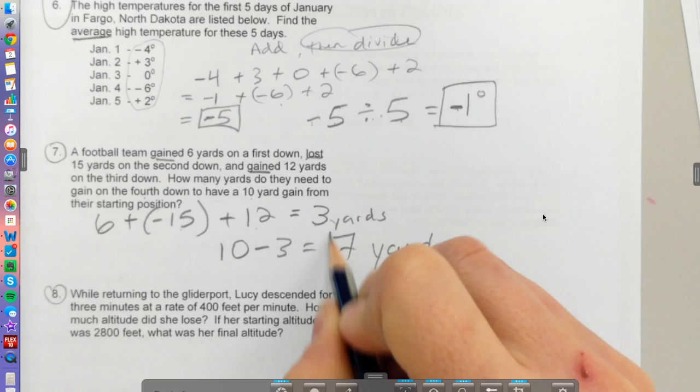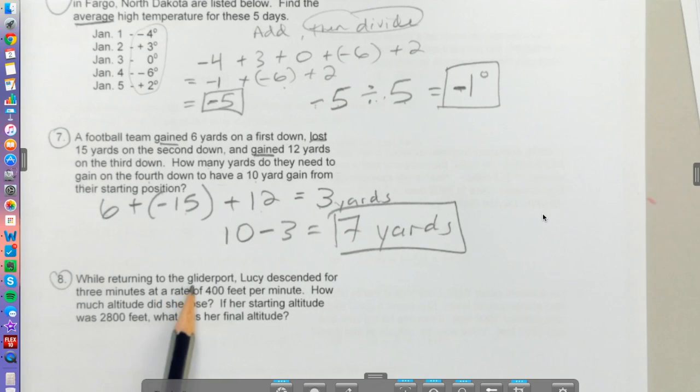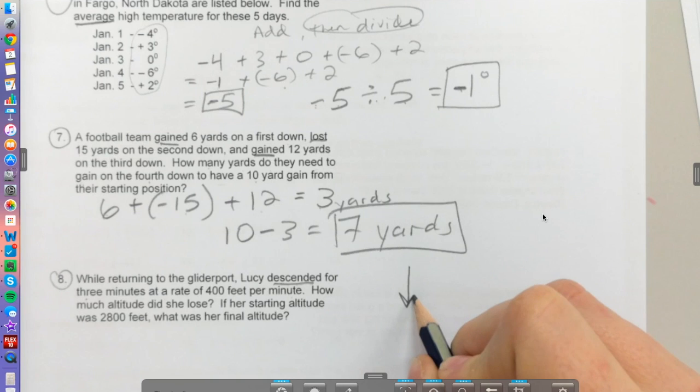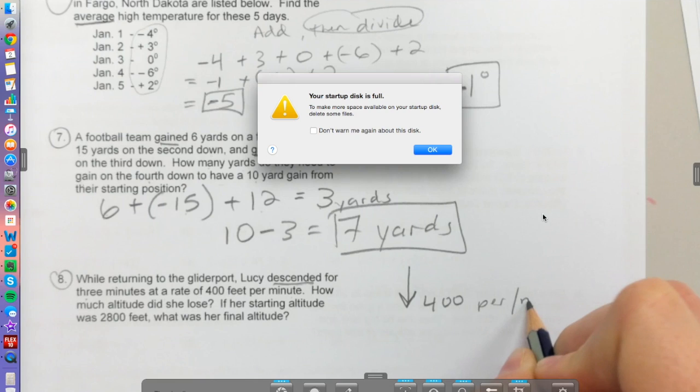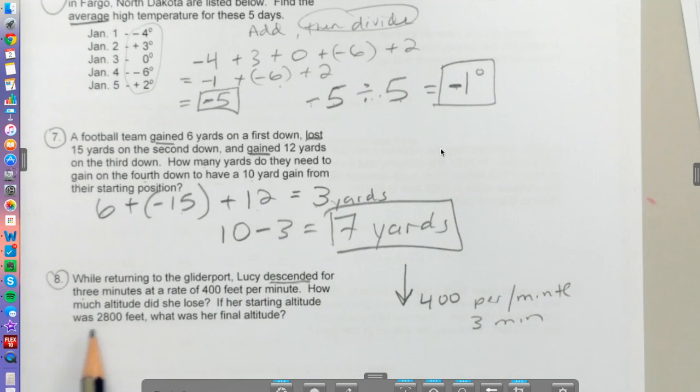Finally, number 8. While returning to the glider port, Lucy descended for three minutes at a rate of 400 feet per minute. She's descending, going down, 400 feet per minute, and she did this for three minutes. If her starting altitude is 2800 feet, what's her final altitude?